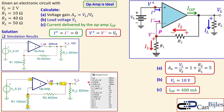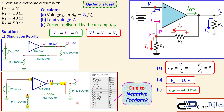Looking at the table of results in the simulator: node 3 shows 2 volts and node 1 also shows 2 volts — they are exactly equal to each other because the op-amp, through negative feedback, forces its inverting and non-inverting inputs to be equal. Since the non-inverting input is referenced to 2 volts, the inverting input is also forced to 2 volts. The output shows 10 volts and the current is 400 mA — all calculations verified.